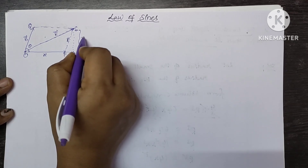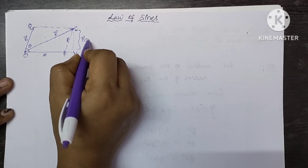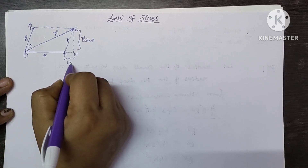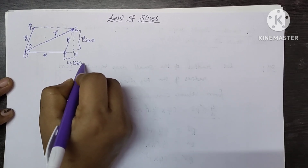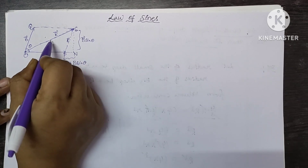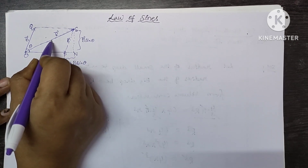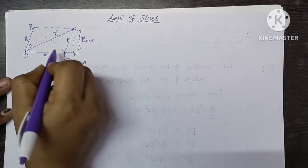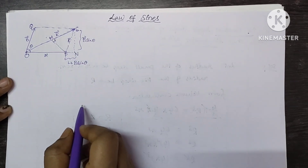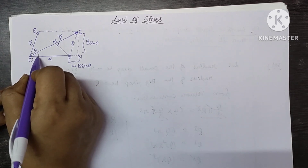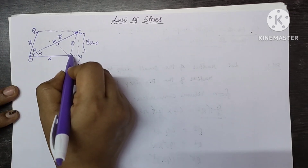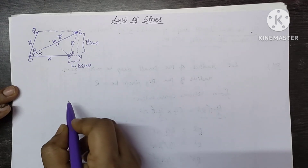This value is B·sin θ. These values I have already explained in that video very clearly. This is P·sin θ. Now we are drawing a perpendicular. Let this point be N. This angle is alpha, and here this angle is theta, so here also the angle is theta.